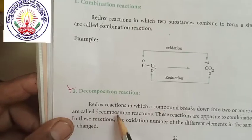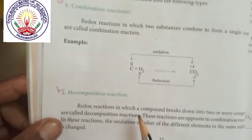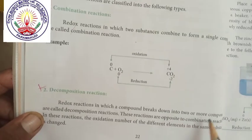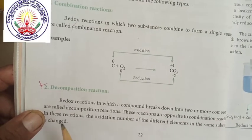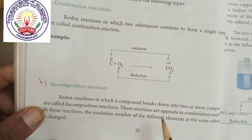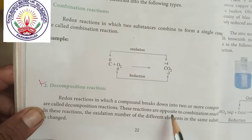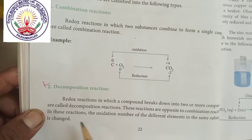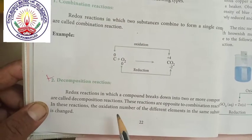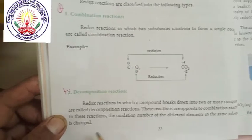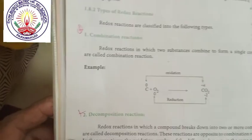Next is decomposition reactions. Redox reactions in which a compound breaks down into two or more components are called decomposition reactions. These reactions are opposite to combination reactions. In this reaction, the oxidation number of the different elements in the same substance is changed.